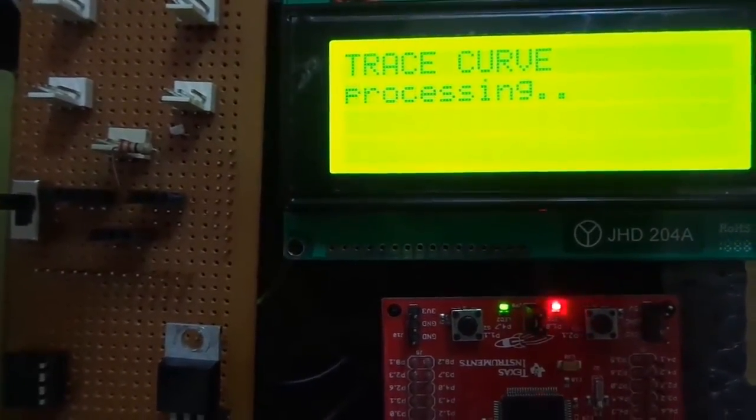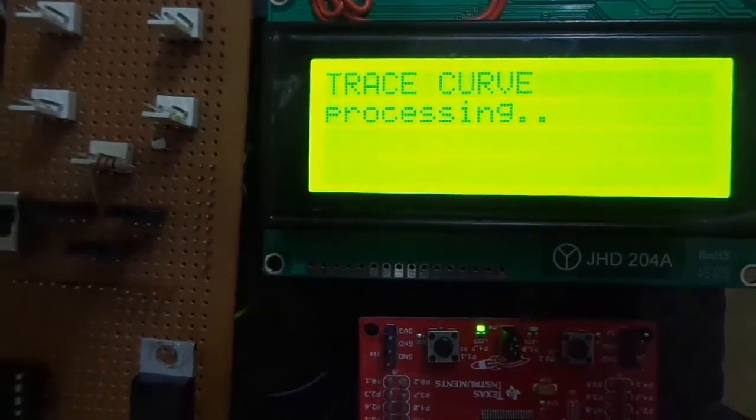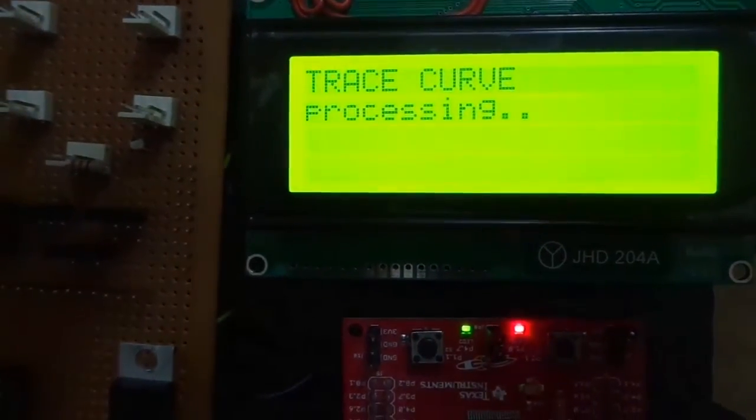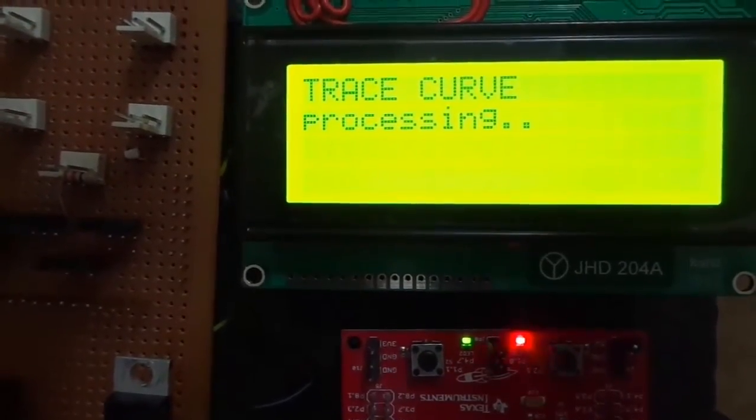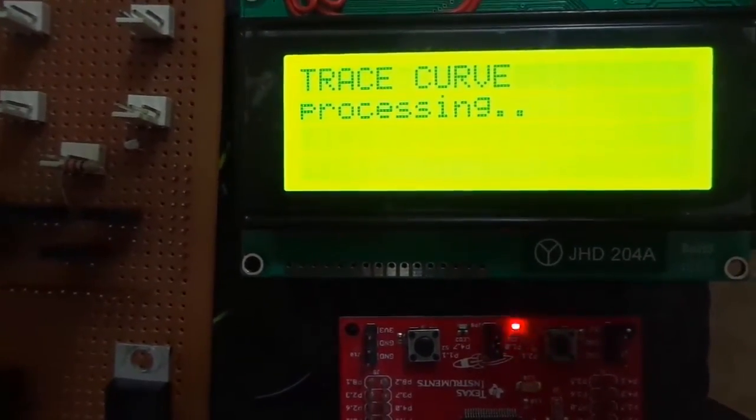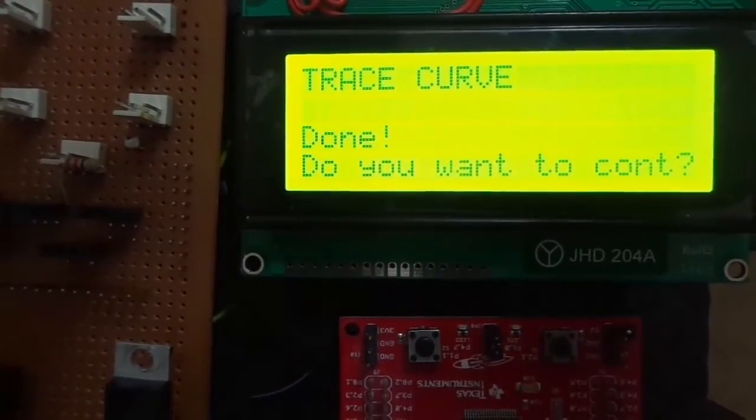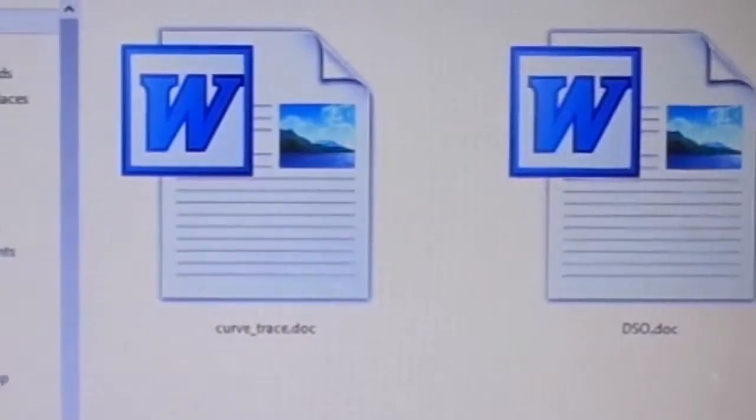It is generating a file in the system. The blinking red LED on launchpad indicates the sampling process. After completion of process, a file will be generated in system and a message will be displayed. You can see a text file has been generated in system.